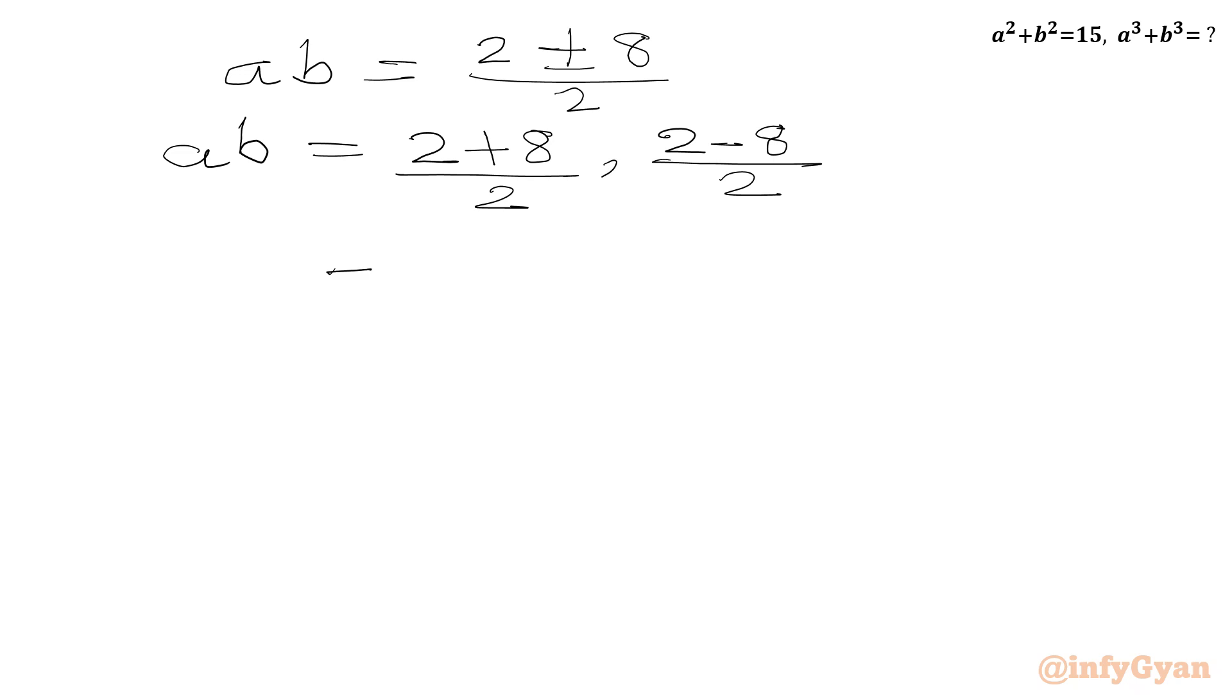So 2 plus 8 is 10 over 2, and 2 minus 8 is minus 6 over 2. So 10 over 2 is 5, minus 6 over 2 is minus 3. We have two ab values: 5 and negative 3.